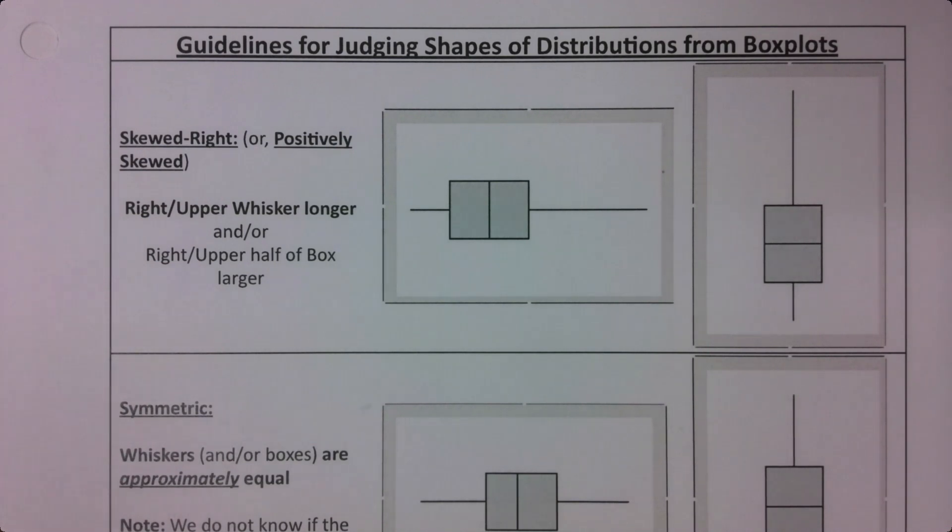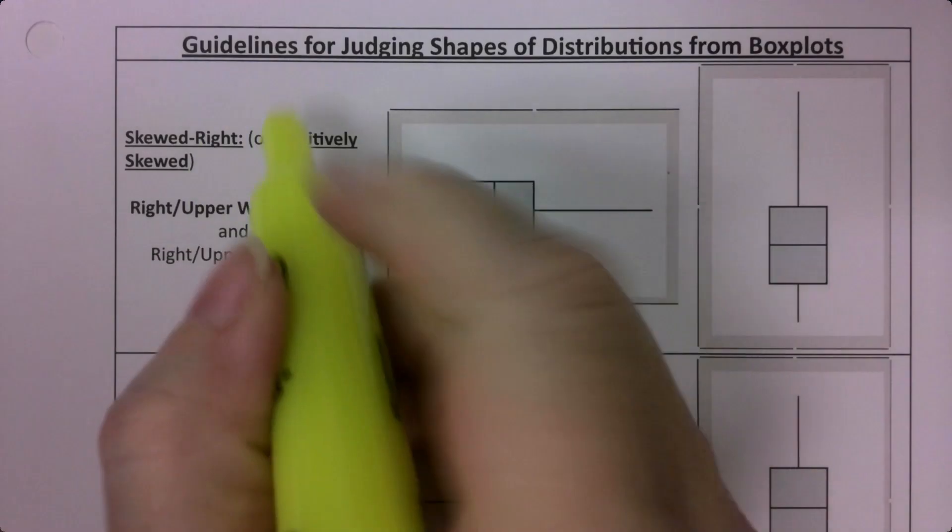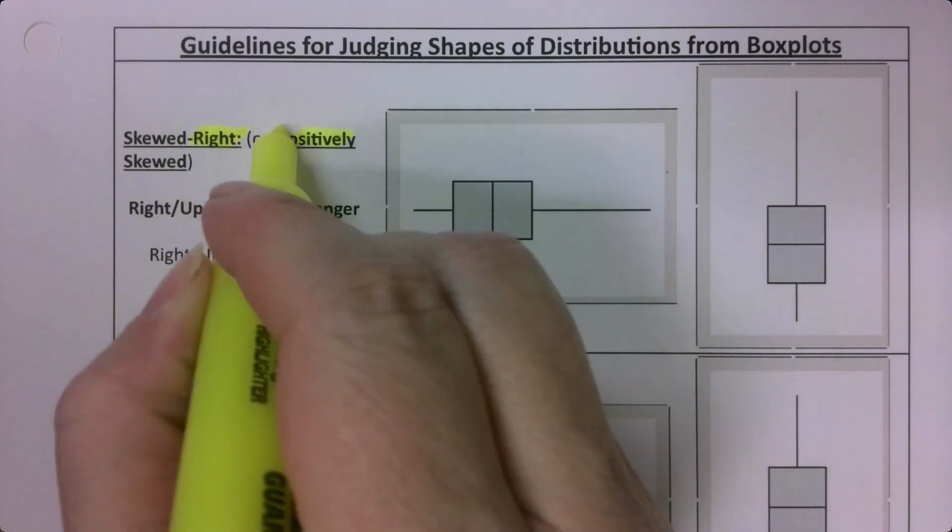So we have positively skewed distributions, which are skewed right, that's the way to write them. So skewed right or positively skewed.